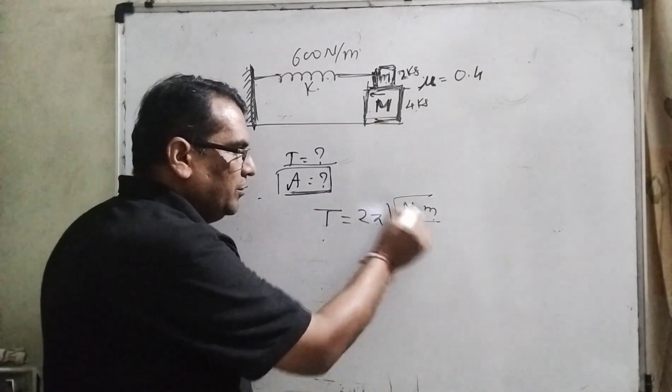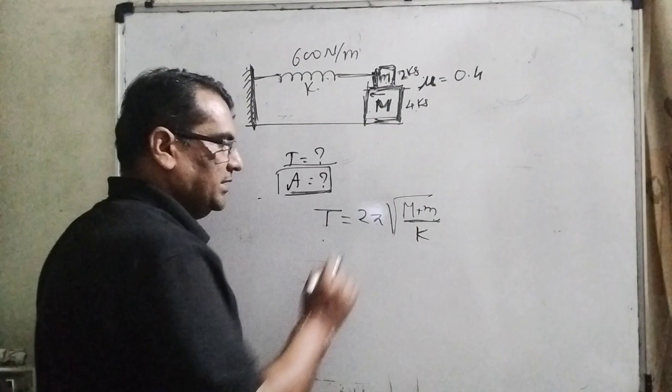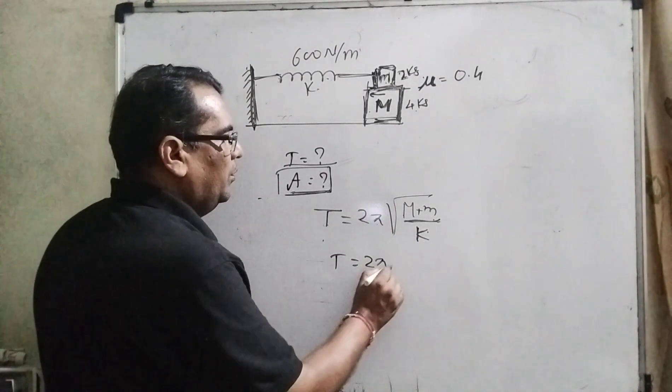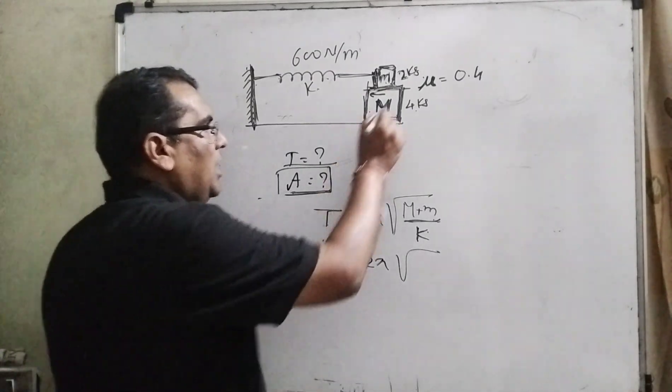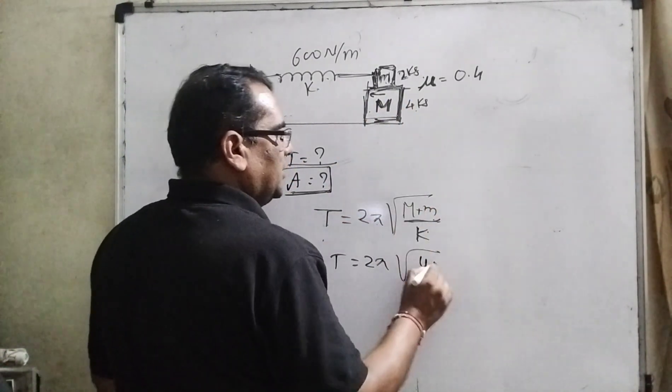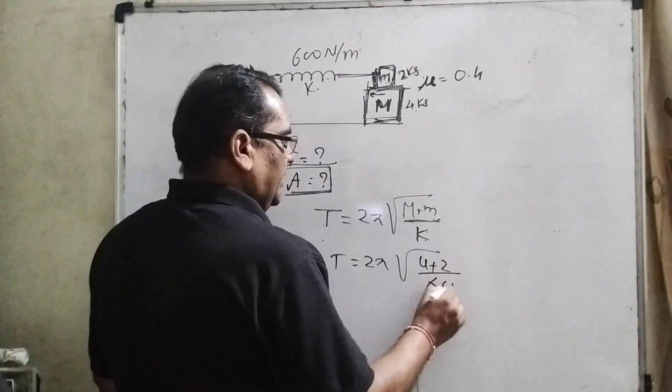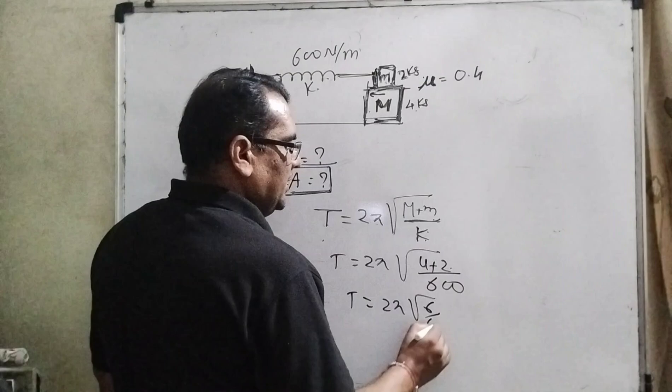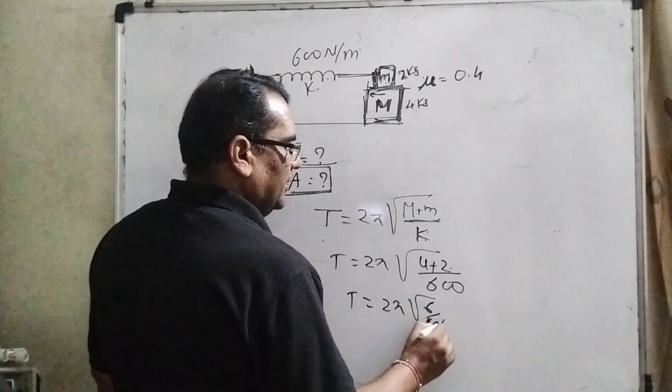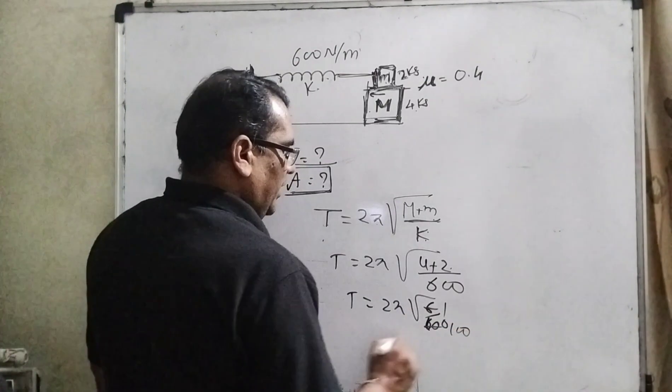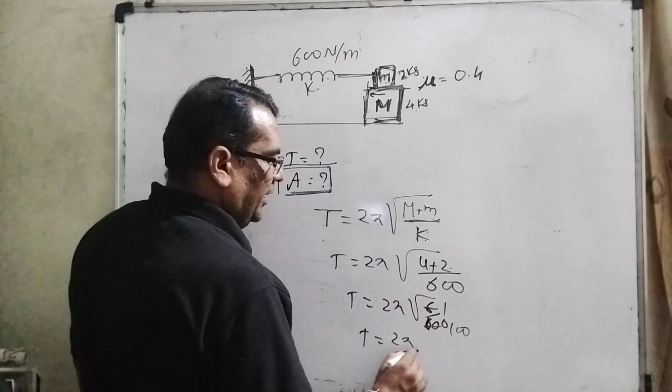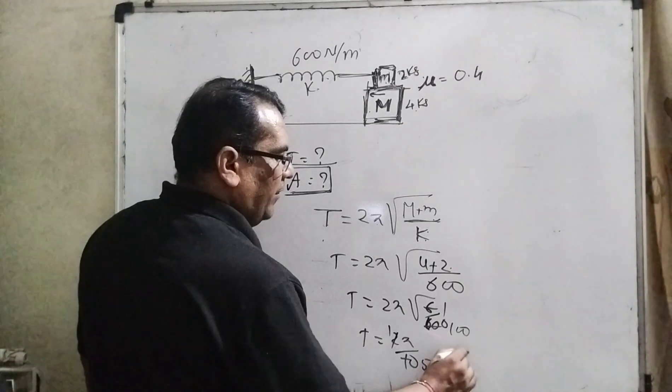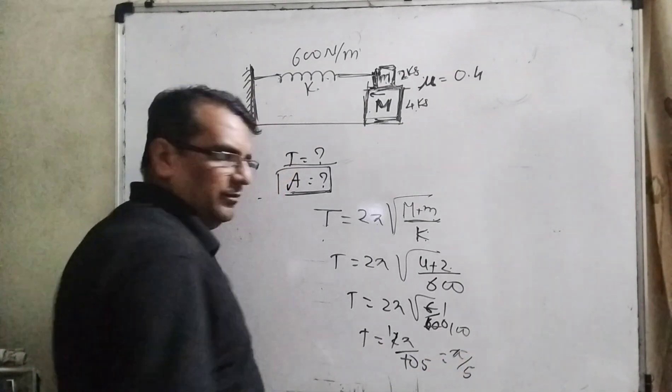So therefore we are using effective mass by combining both the masses. K is the spring constant. Then T = 2π√((4+2)/600). T = 2π√(6/600) = 2π√(1/100). Then T = 2π/10. Simplifying: 2 pi by 5.